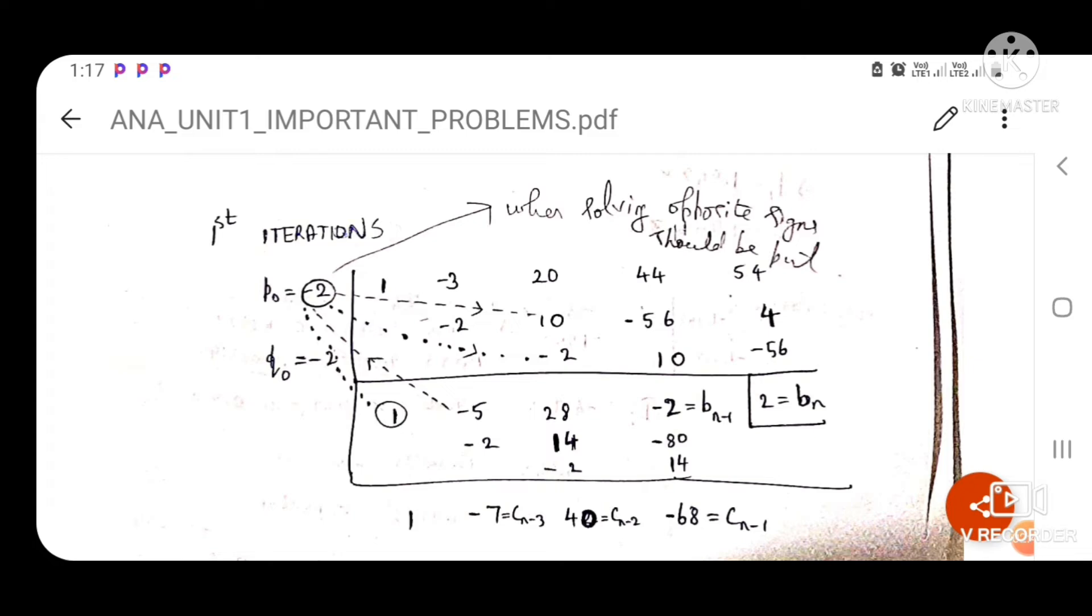Next you insert the initial value Q naught and the procedure is the same. 1 into minus 2 gives minus 2 which is placed under minus 5.